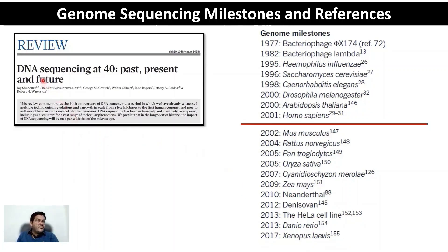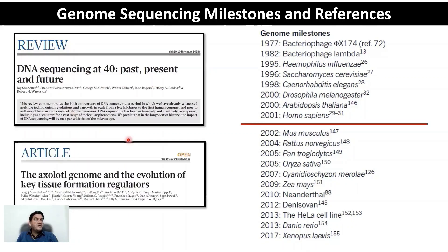A good reference paper for you is 'The End of Sequencing at 40: Past, Present and Future.' I also recommend going through the paper 'The Axolotl Genome and the Evolution of Key Tissue Formation Regulators,' which reports the sequencing of the axolotl genome, or Xenopus laevis.